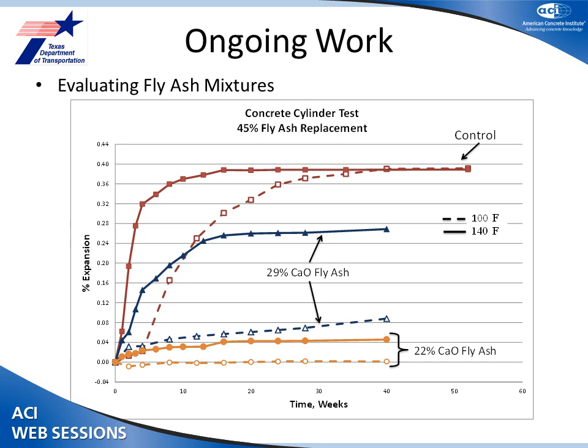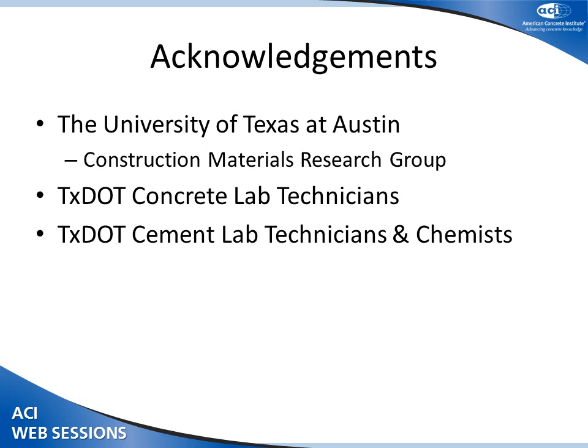The last area is looking at fly ash mixtures. The 1293 test for SCMs is a two-year test. Looking at our initial fly ash mixtures at 45% replacement — a 29% CaO ash at 140°F and 100°F, and a 22% CaO ash at the same temperatures — there's a big difference. We've already flat-lined at the hotter temperature, but coming up on a year at the lower temperature, we've just started to ramp up expansion. The difference between high CaO versus low CaO on these C-ashes is some interesting stuff. We've got a bunch of ash mixtures still cooking, so it's going to be some interesting data. Like the University of Texas, we work closely with them on this. Our concrete and cement lab technicians do all the work — I'm just up here telling you what they do. Thank you.